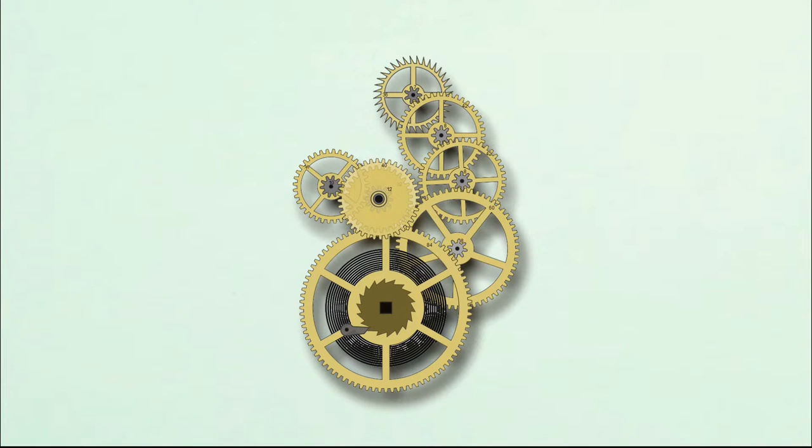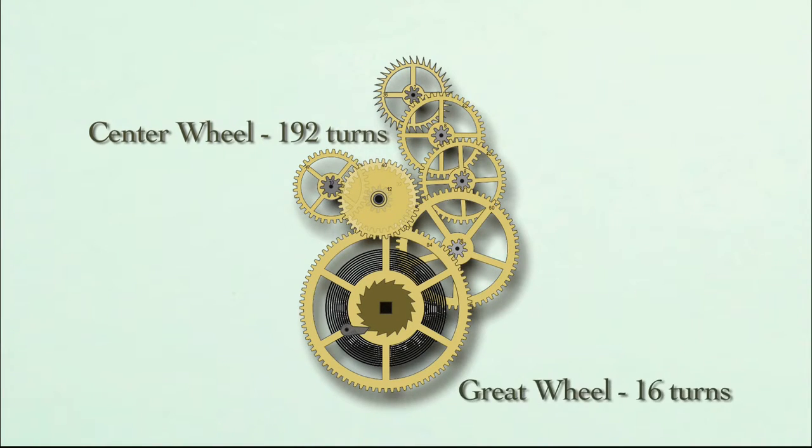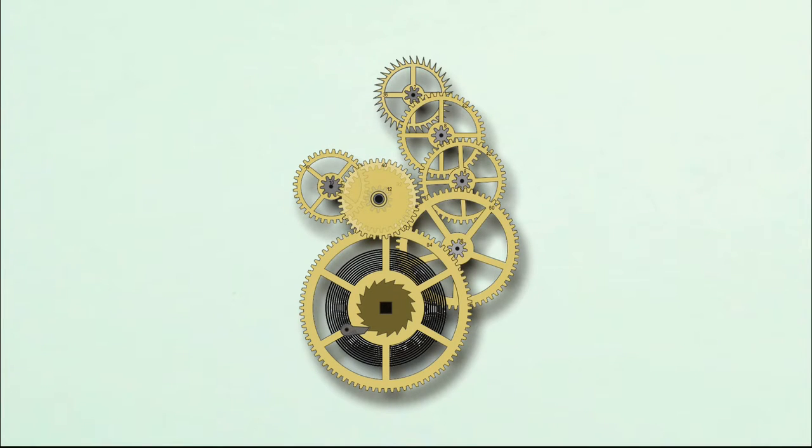Through the gearing up process in the wheel train our center wheel can turn 192 times or eight full days while the great wheel only turns 16 times during the same period. The wheels above the center wheel are accelerated even more until we get to the escape wheel. It may turn several thousand times per day.